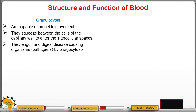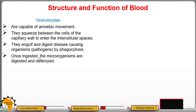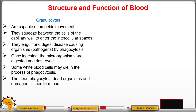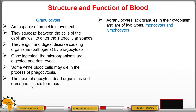Granulocytes engulf pathogens and digest them through phagocytosis. Once ingested, the microorganisms are digested and destroyed. Some white blood cells die in this process. The dead phagocytes, together with dead microorganisms and damaged tissues, form pus — the material that comes out of a wound that is not fresh.